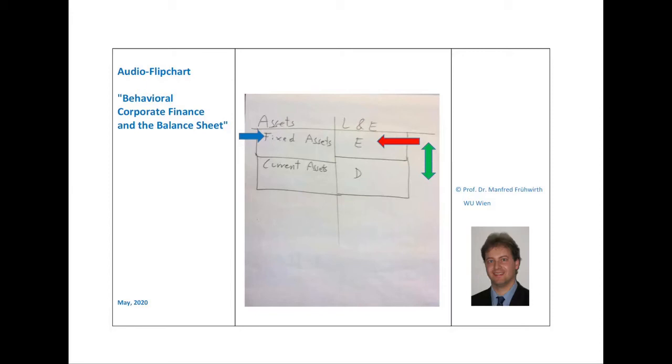Other objects of investigation are, for instance, whether a company should issue new stocks, whether it should repurchase stocks from the market, or how much dividend the company should pay out to the shareholders. All these decisions are related to the equity part of the balance sheet. These questions are illustrated on the flipchart by the red arrow.